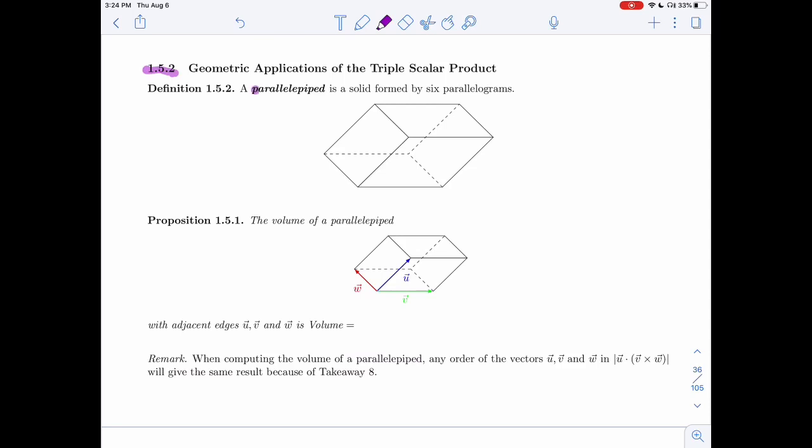We'll call a solid a parallelepiped if it is formed by six parallelograms. Alright, so let's look at what this means.